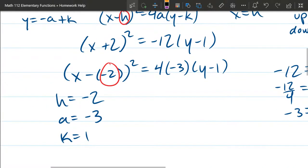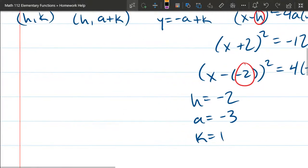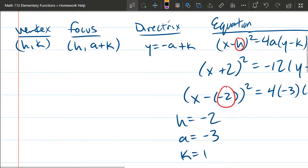Alright, once we have h, a, and k, we can go over and look at the other properties. So the vertex is (h, k). So the vertex is (-2, 1).